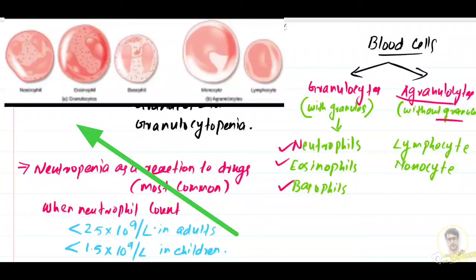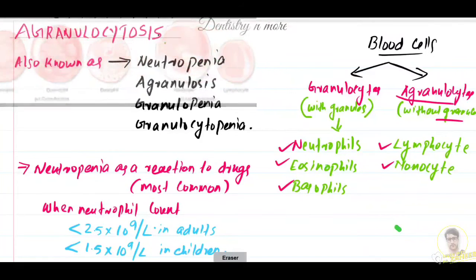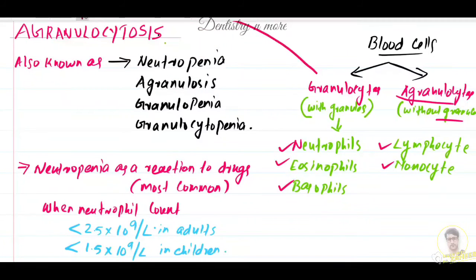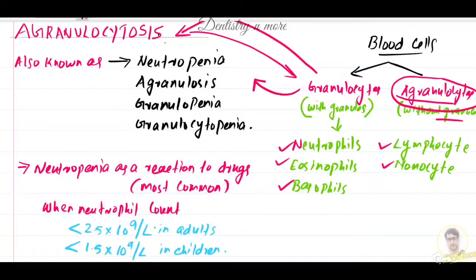Agranulocytes are those without granules in the cytoplasm. Granulocytes are neutrophils, eosinophils, and basophils, whereas agranulocytes are lymphocytes and monocytes. We are studying a condition where the granulocytes are not properly present. We might get confused with agranulocytes here, but we are actually studying about granulocytes — the condition where granulocytes are less in number.